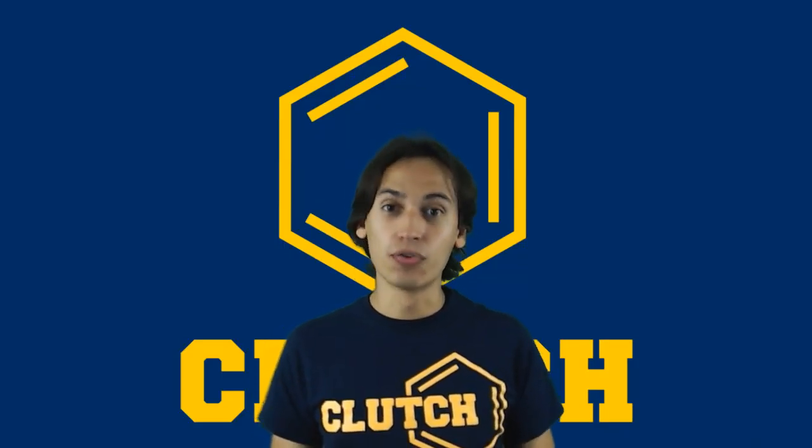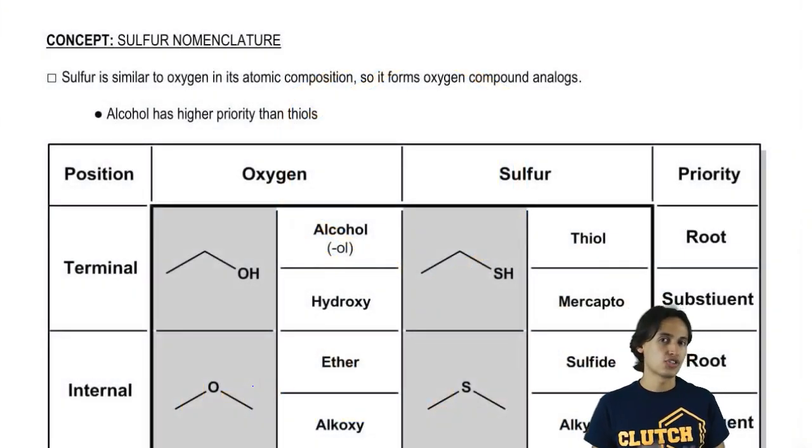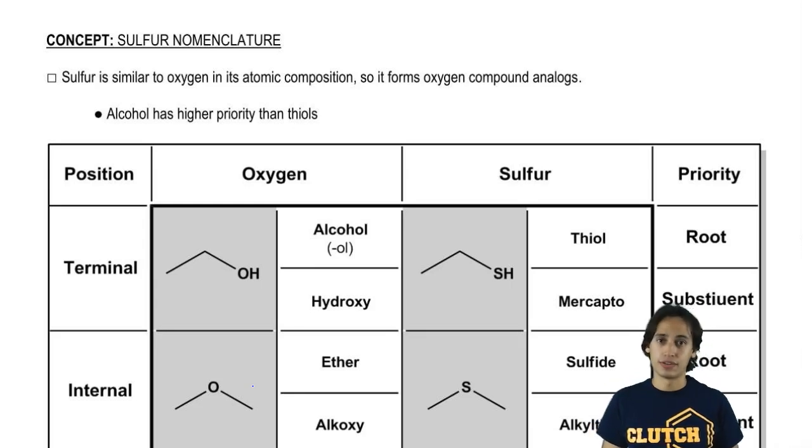Now let's talk about the nomenclature of sulfur-containing compounds. It turns out that sulfur-containing compounds are going to be named very similar to oxygen compounds because of its placement on the periodic table.